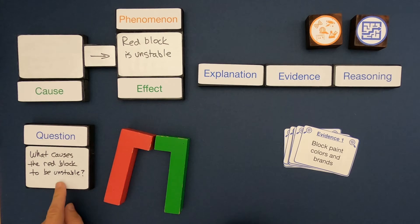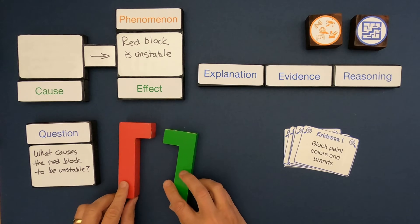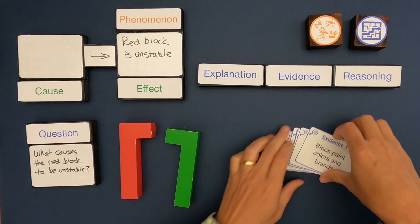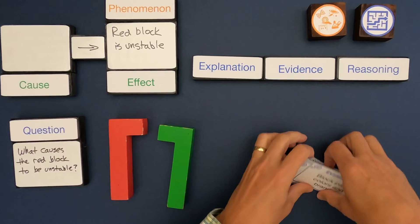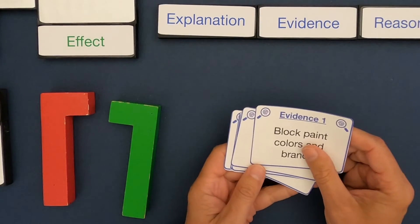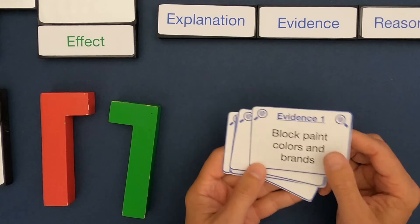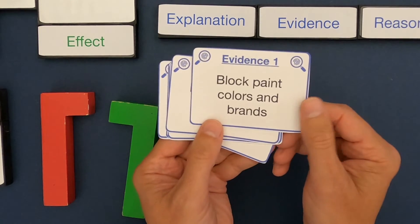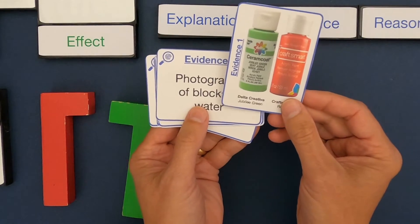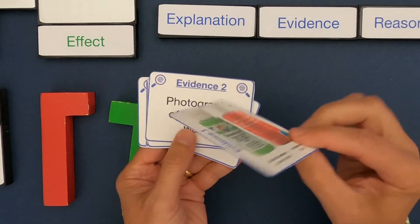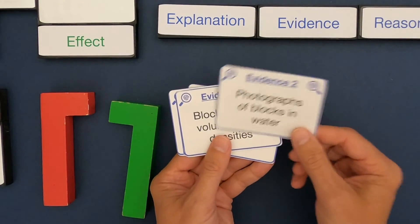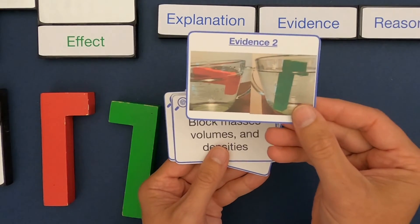The question that we're trying to answer is: what causes the red block to be unstable? Now I could do a bunch of experiments on this, but that's not what this video is about. This video is about looking at a bunch of evidence and figuring out what evidence would help us figure out an explanation for the phenomenon and what wouldn't. As I look through this, the first evidence I have is block paint colors and brands. I would say this evidence is not going to be that helpful.